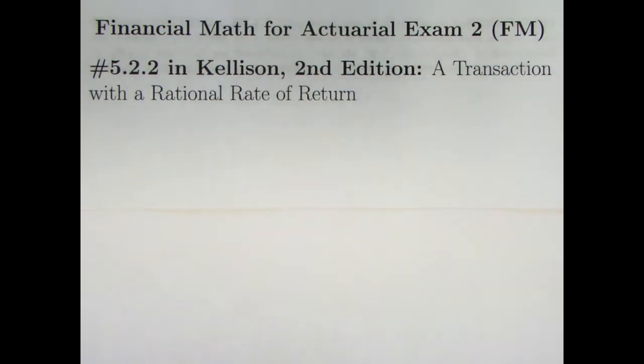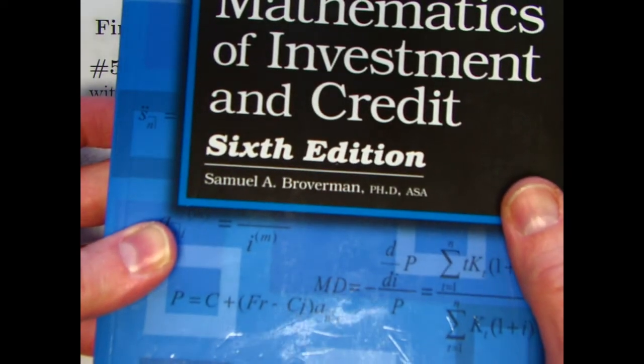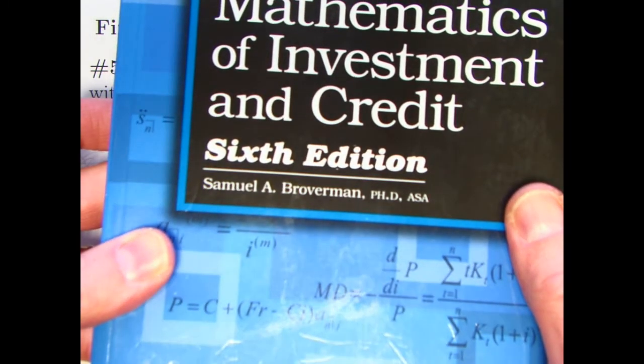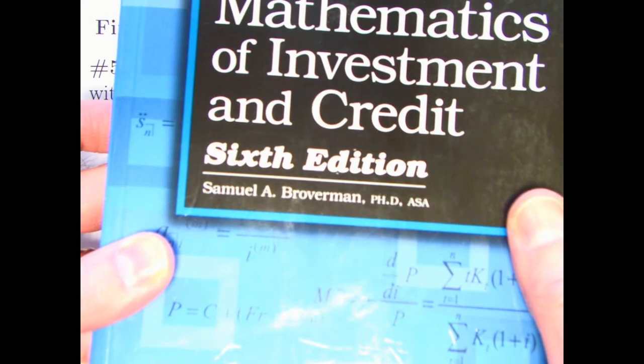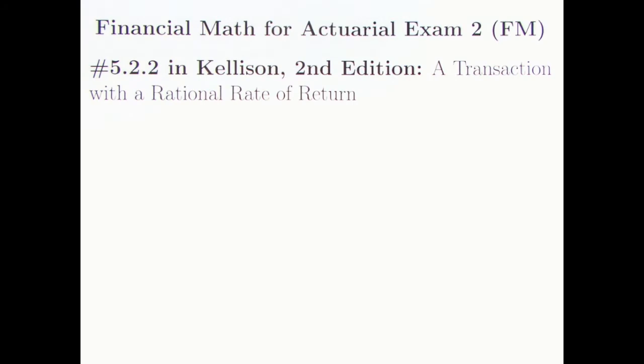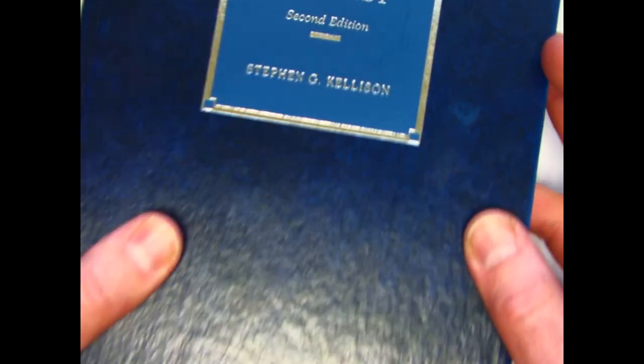In the second edition of Kellison's book, it's a financial transaction with what turns out to be a rational number rate of return. Mostly we do problems from Broverman's book, and we've done that recently. Though the problems in Broverman's book about internal rates of return and net present value are fairly long, I thought it would be good to do some shorter videos, including shorter problems that come from Kellison's book, The Theory of Interest, second edition.